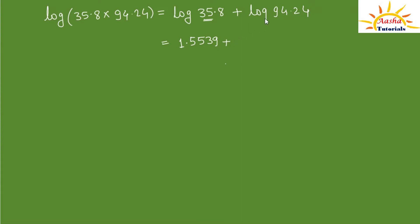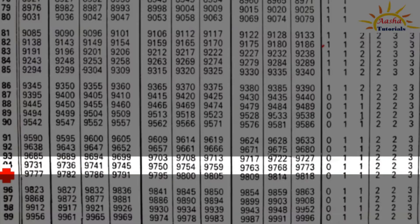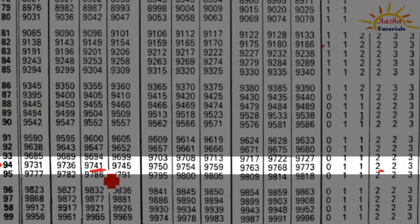Now finding log of 94.24: 94 is a 2-digit number so its characteristic value is also 1. We find the log of 94 in the 2nd column, which is 9741, and the mean difference from the 4th column is 2. Adding 2 gives us 9743. So log of 94.24 is 1.9743.